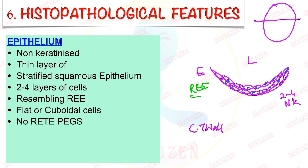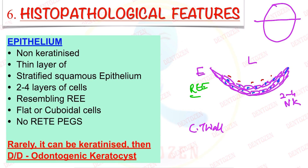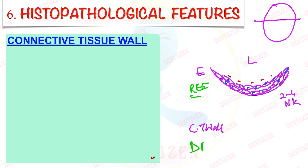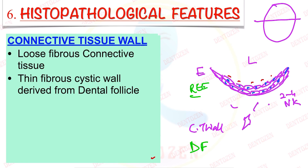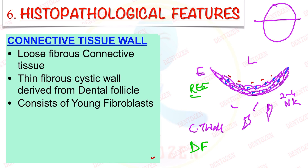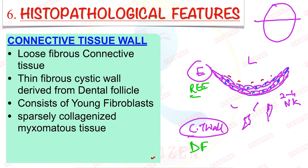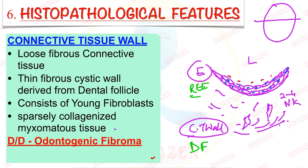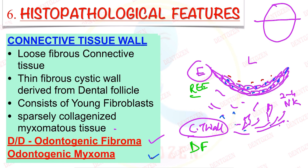Rarely, the epithelium can become keratinized — in that case it can be confused with odontogenic keratocyst (OKC). The connective tissue wall is dental follicle — loose fibrous connective tissue with young fibroblast cells, sparsely collagenized. If collagen content increases, it can be confused with odontogenic fibroma; if it has myxomatous content, it can be confused with odontogenic myxoma — both are differential diagnoses.